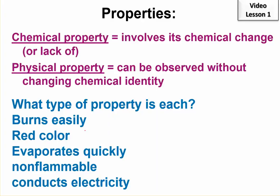Burns easily. Burning is a chemical reaction, so this defines a chemical property. Red color, that does not involve any chemical change or change in substance. That's just something that's observed. This is a physical property.